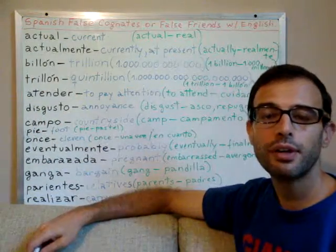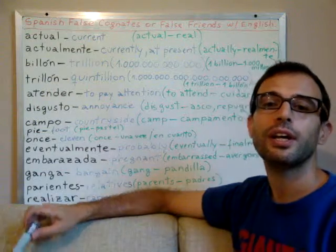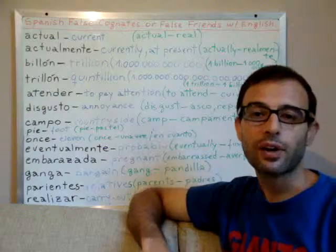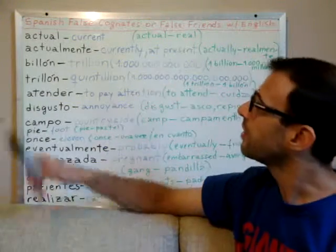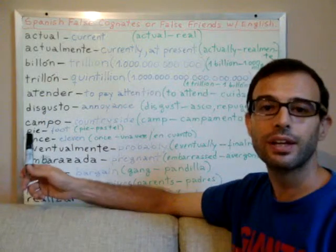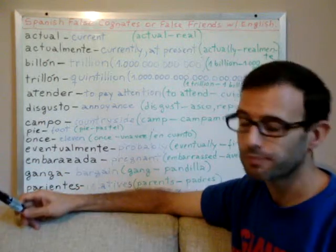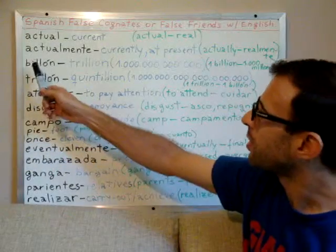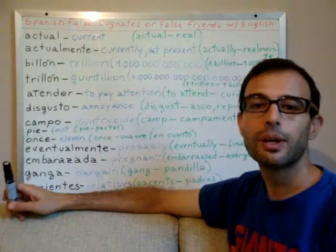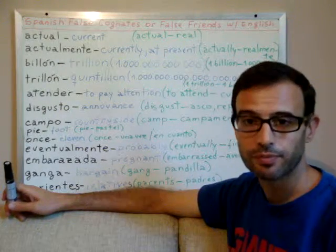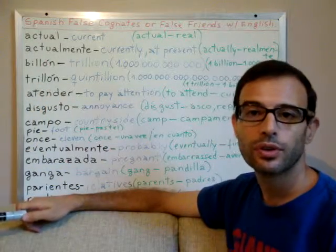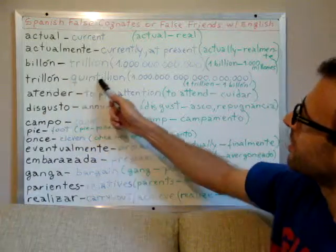These two words are very much confused when dealing with economic information in the news. The words for 'billion' and 'trillion' mean totally different things in Spanish and English. For example, 'billón' in Spanish means one trillion in English, while the word 'trillón' in Spanish means one quintillion.